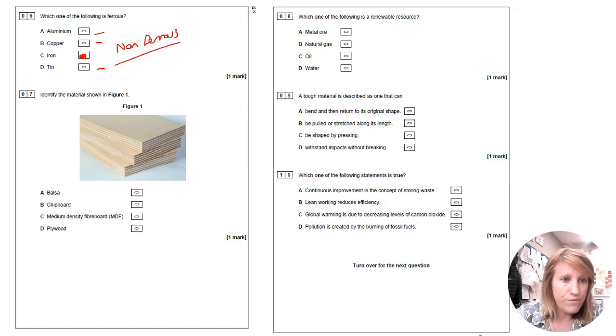Identify the material shown in figure one. If you can't get that, something's gone wrong. It's plywood. You can see the layers. MDF is the only other manufactured board. Oh, no, it's not. Chipboard is a manufactured board and balsa is the little tricky, sneaky hardwood there that actually is quite a soft material and can sometimes you would think it's a soft wood. But it's actually a hardwood because it comes from a deciduous tree.